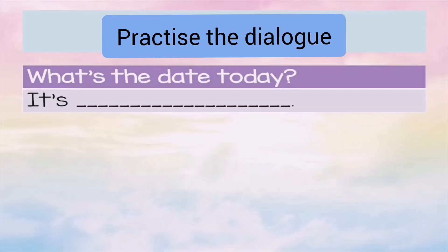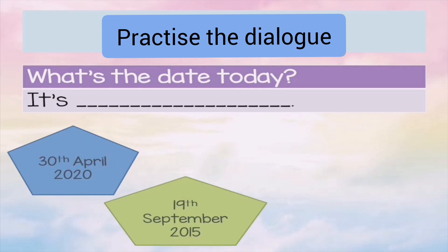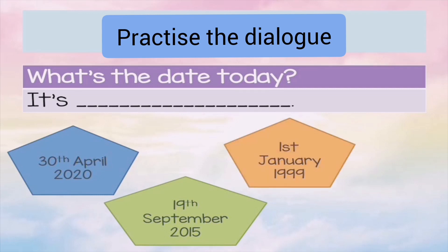Now we're going to practice the dialogue. The question is: 'What's the date today?' Number one: '30th April 2020' — so you say 'It's 30th April 2020.' Number two: 'What's the date today?' — 'It's 19th September 2015.' Third question: 'What's the date today?' — 'It's 1st January 1999.'